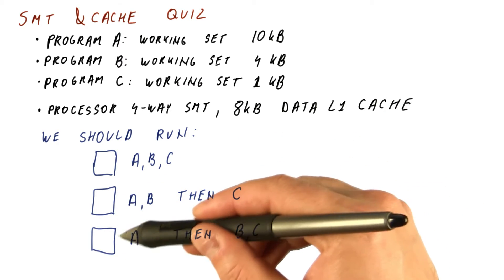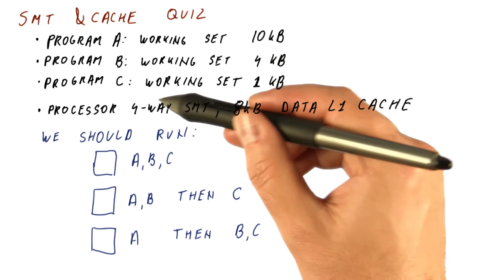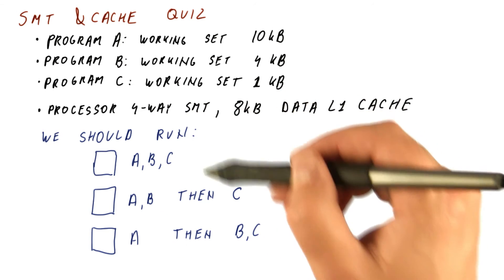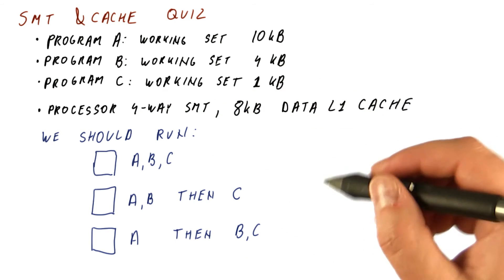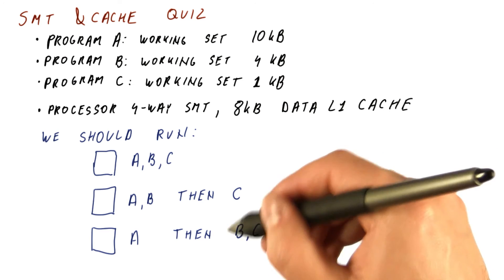We run A without using the other three SMT ways, then we run B and C in two of the four SMT ways, but we don't run A together with the other two.